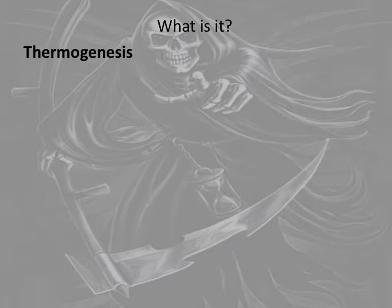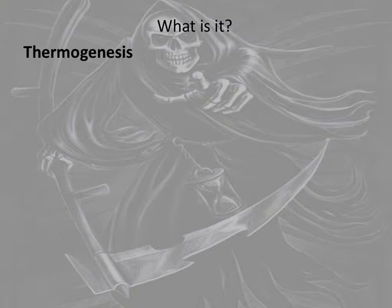The first one is thermogenesis. What does that literally mean? Generation of heat. Where does it occur - not just in mitochondria, but specifically what tissue? Bears have it, hibernating animals have lots of it. What kind? Brown.